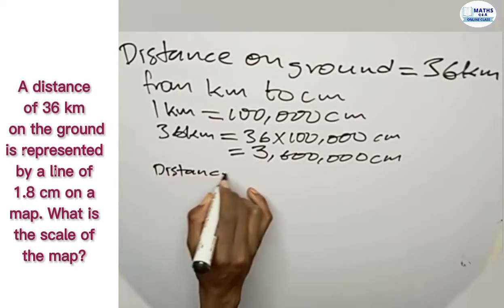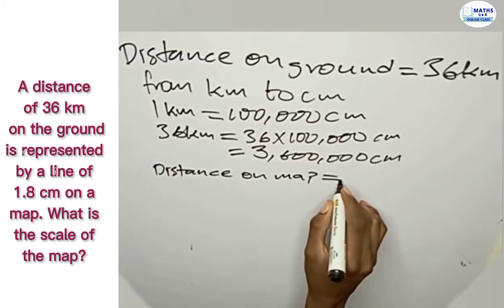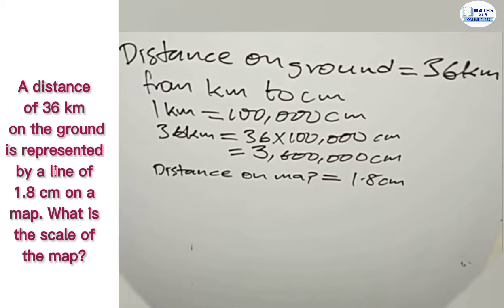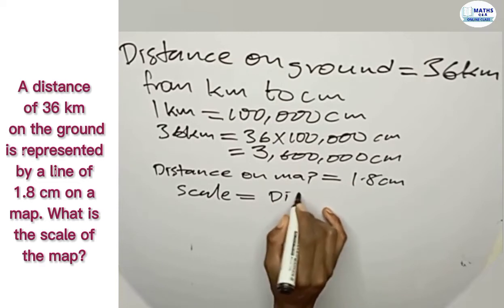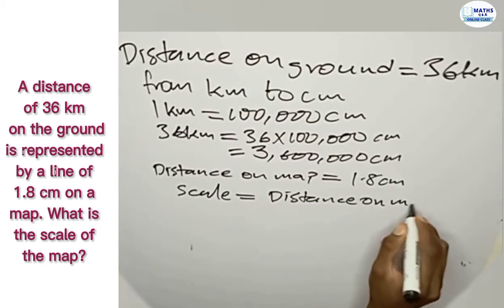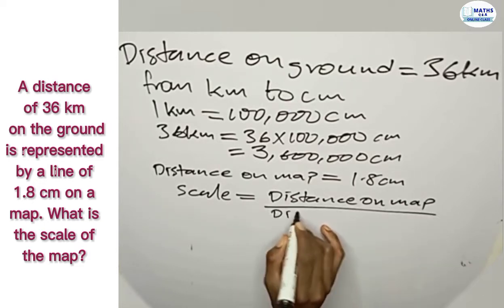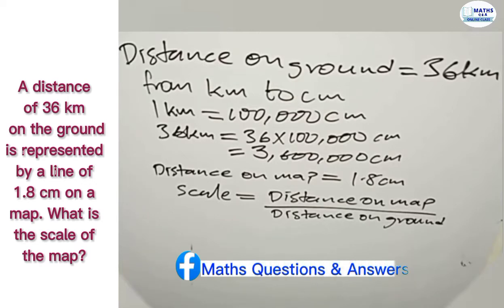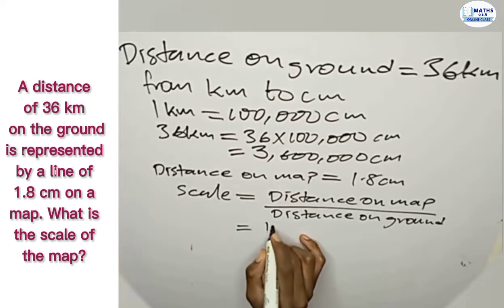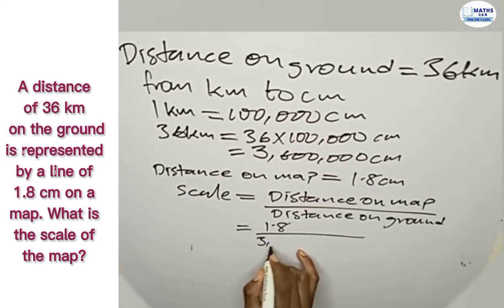The distance on the map is 1.8 centimeters. To find the scale using the distance on the map and the distance on the ground, the scale is equal to distance on the map divided by distance on the ground. Now that both distances are in centimeters, we have 1.8 divided by 3,600,000.